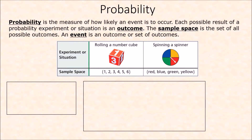An event is basically something that we do to get an outcome. For example, rolling dice — the event is rolling, and the outcomes are the sides. The sample space would be all six sides. Another example: spinning a spinner. This spinner has four sectors colored red, blue, green, and yellow, so its sample space is four.